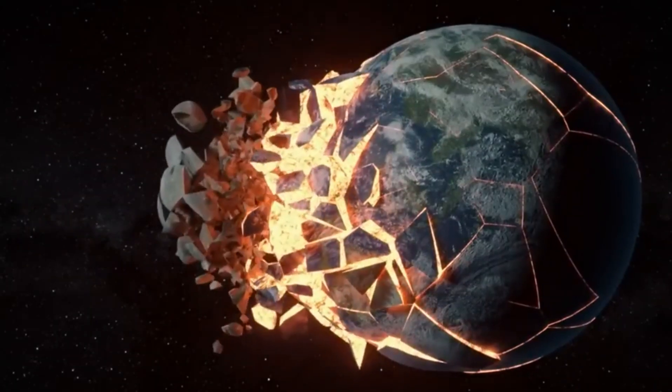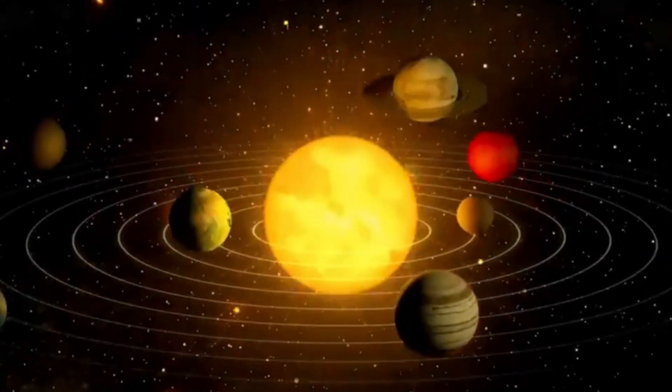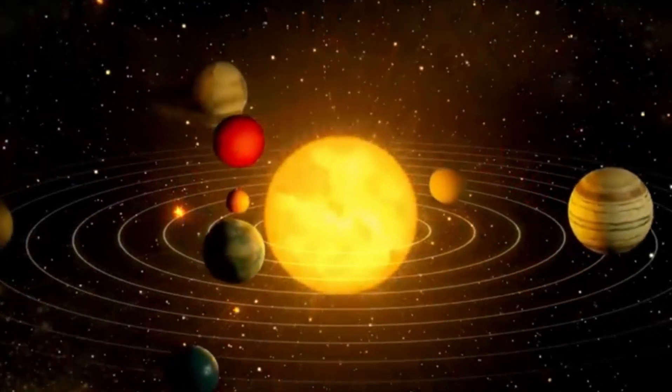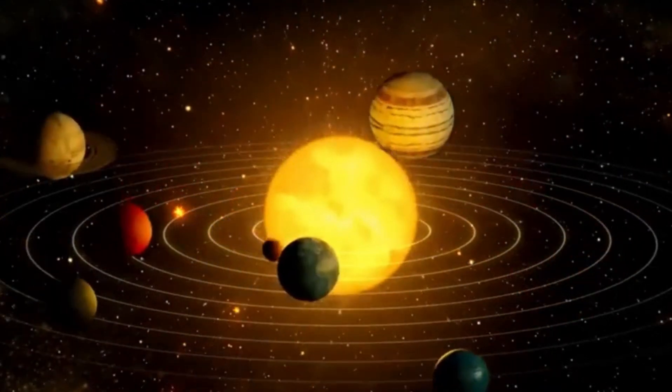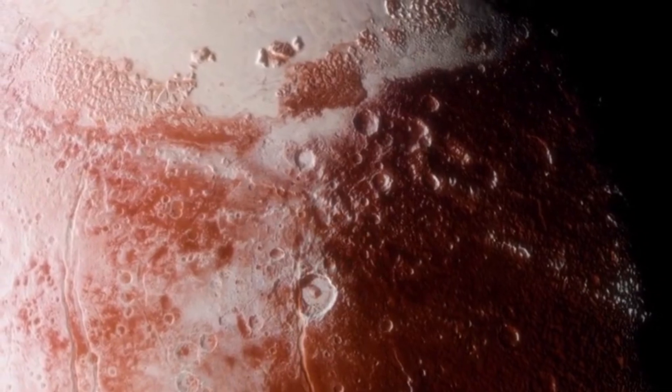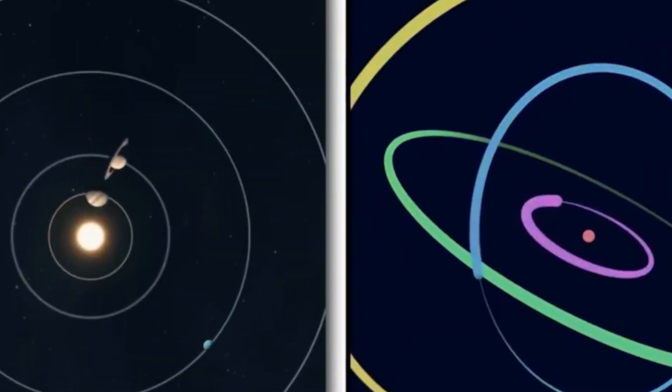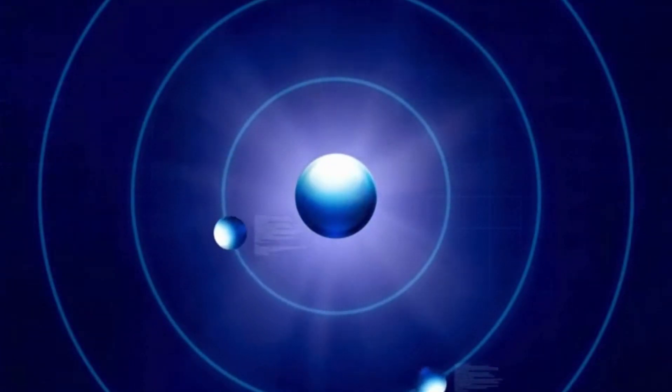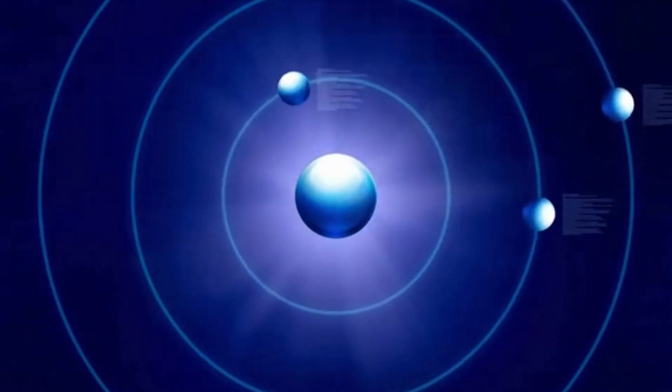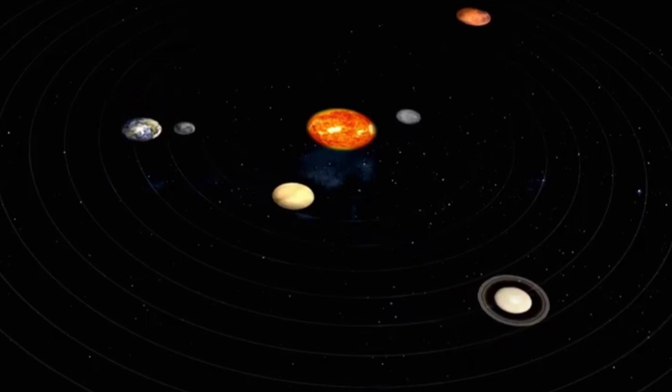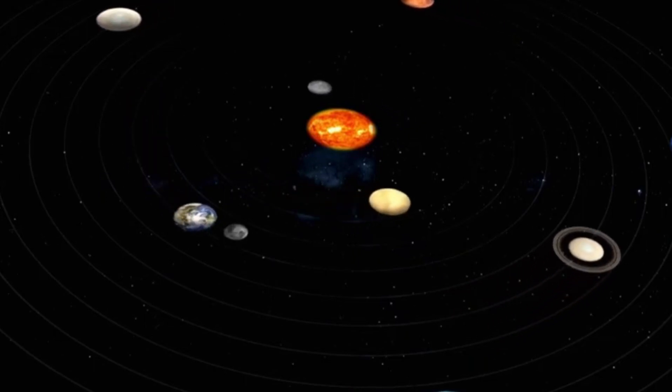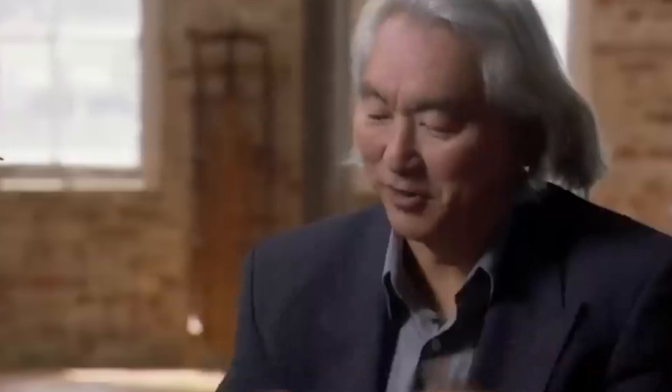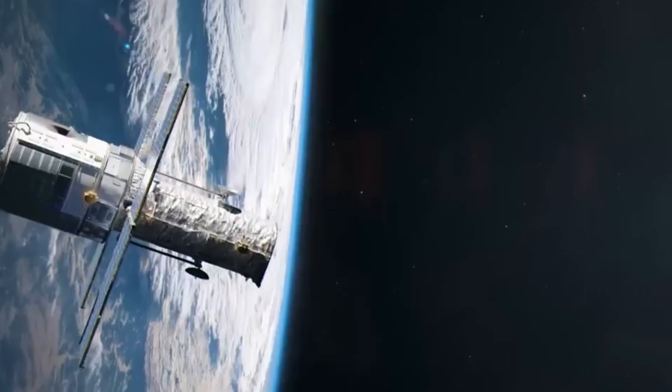As these objects were thrown into erratic paths, many found their way into the inner solar system, leading to a spike in impacts on the terrestrial planets, including Earth. While not involving planet-planet collisions, it demonstrates how gravitational interactions can lead to significant changes in celestial bodies' trajectories. This bombardment likely played a crucial role in shaping the surfaces and even the geological histories of these planets, including the potential delivery of water and organic materials to Earth.